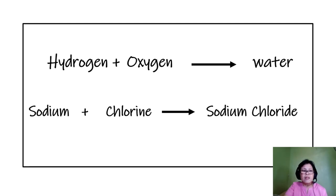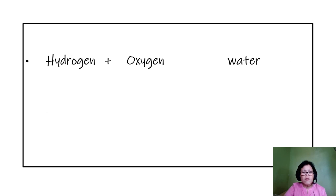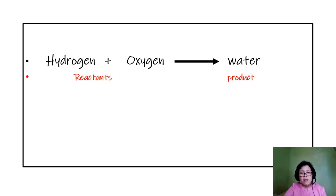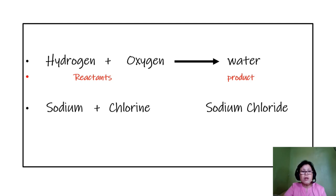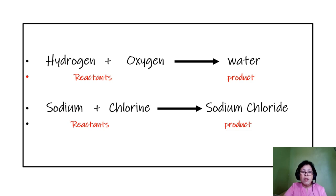Now let's talk about the substances involved in the reaction. You have hydrogen plus oxygen resulting in water. The substances on the left side of the reaction are called reactants, and the substance on the right side is called the product. For the sodium and chlorine example, sodium and chlorine are the reactants and sodium chloride is the product. Substances written at the left side are reactants; substances written at the right side, separated by an arrow, are the product.